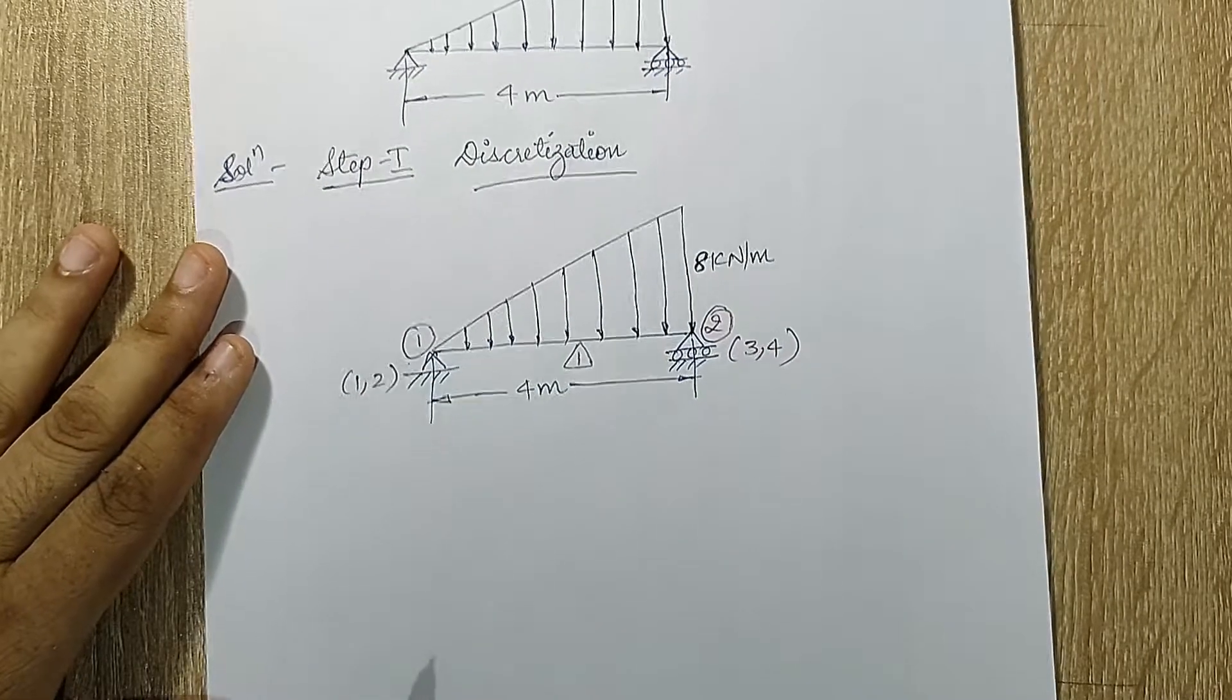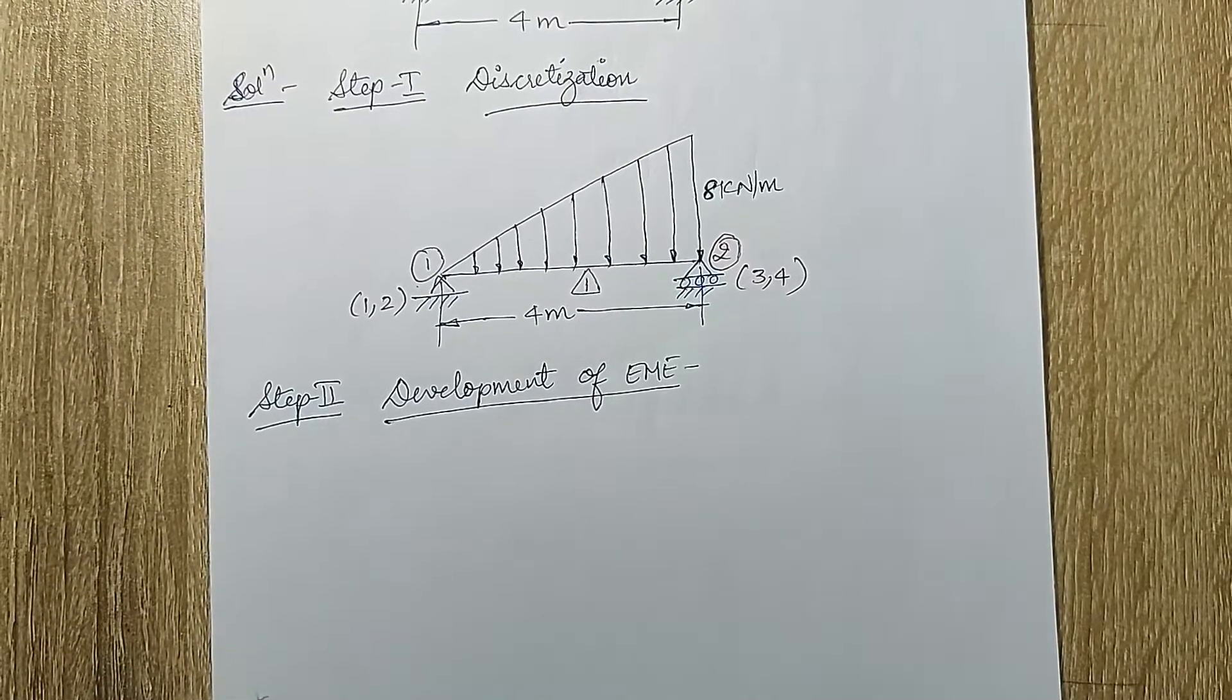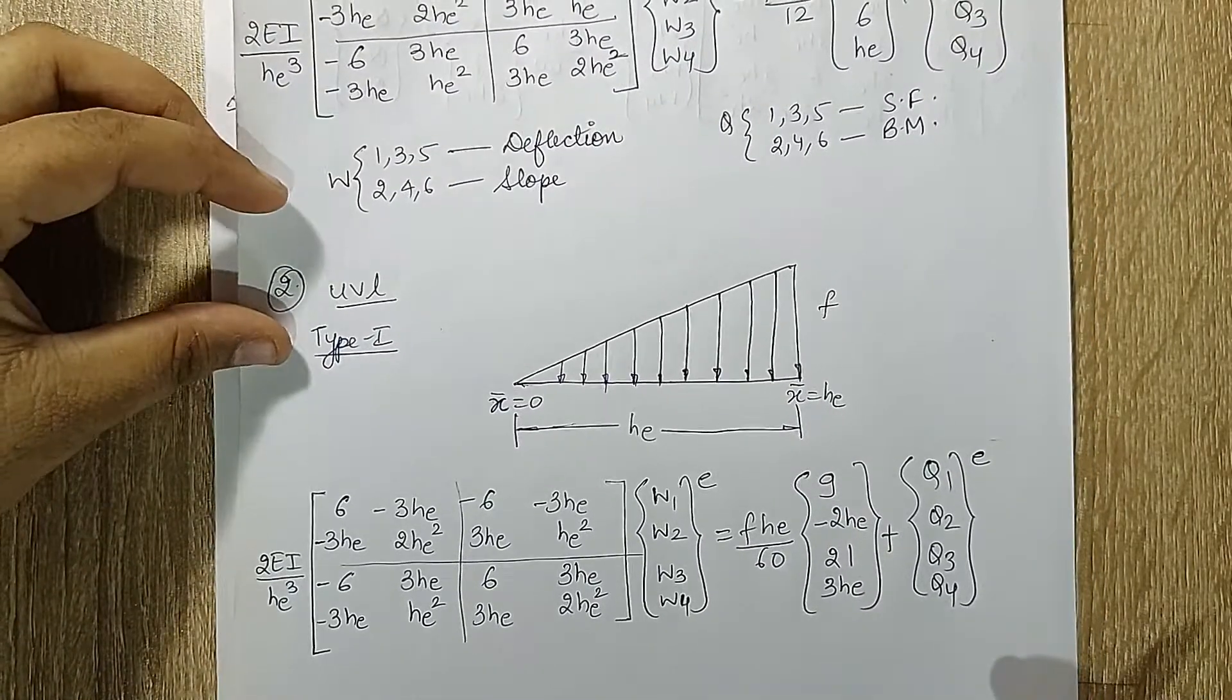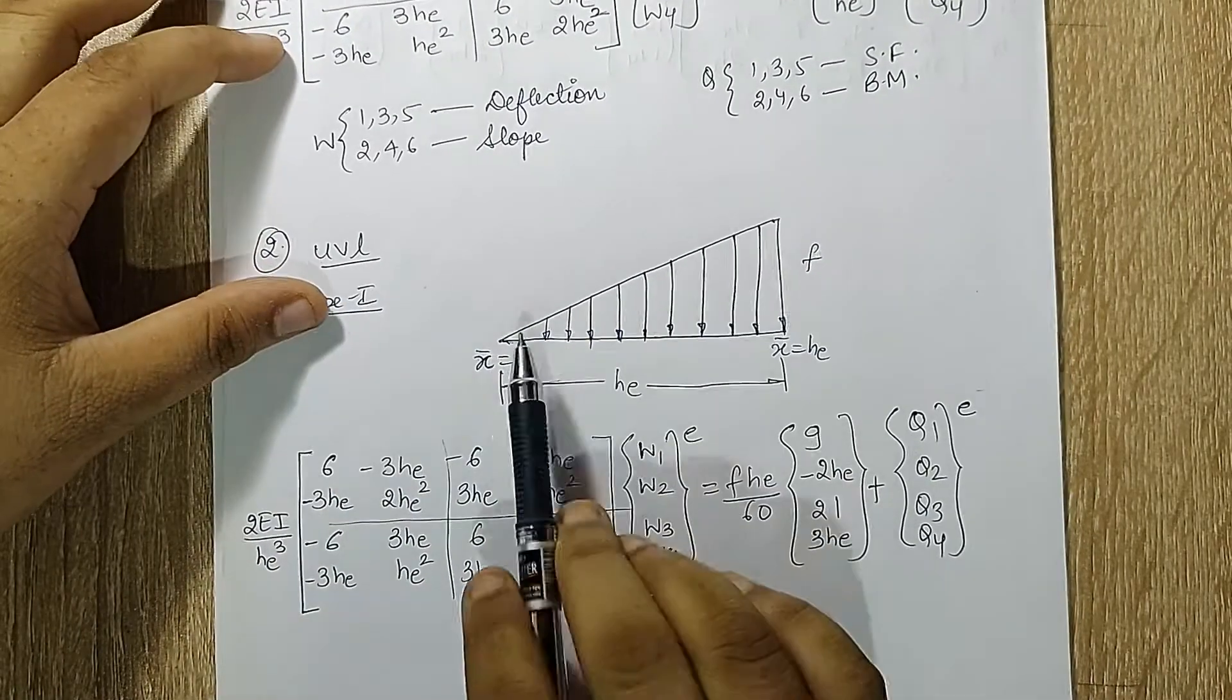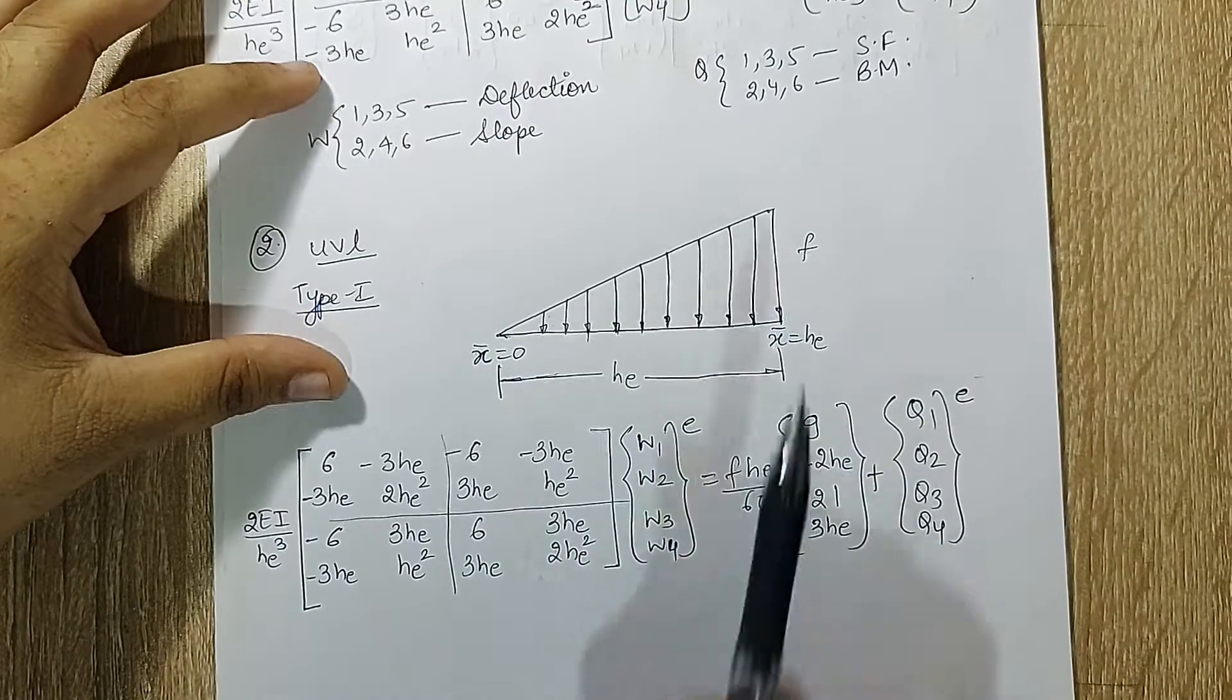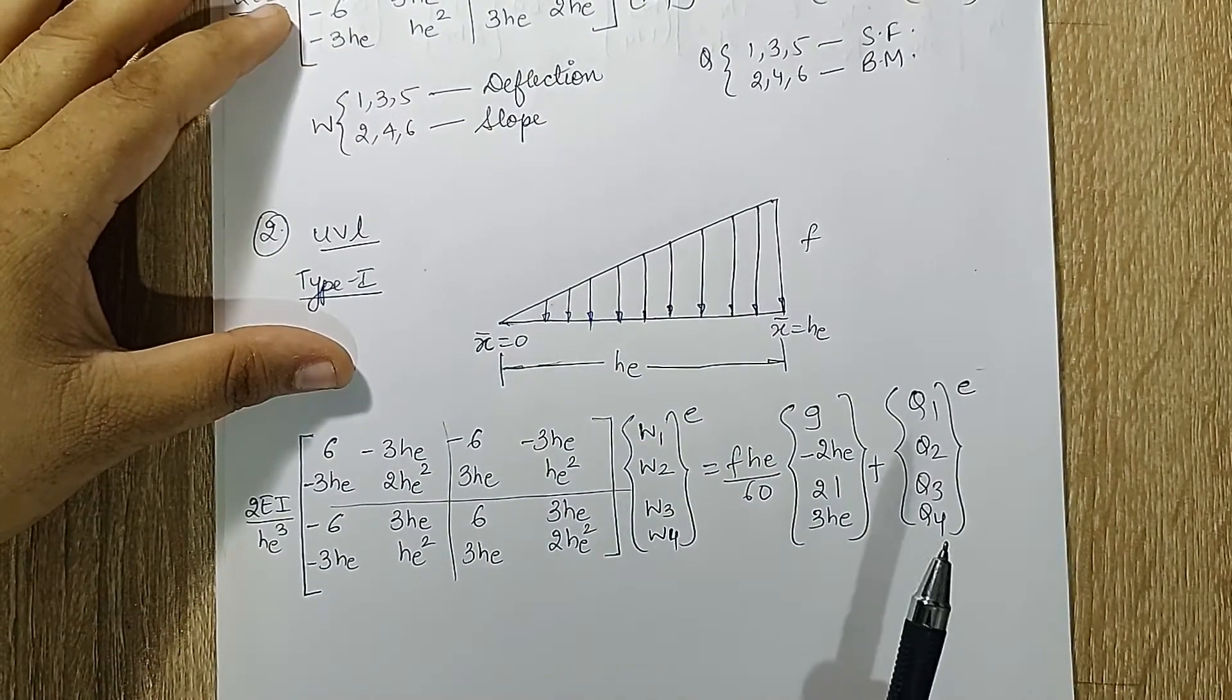Next step is development of EME. Now here at this point I would like to mention that there are two types of UVL. I'll show you a formula list which I have made here. I am showing you the first type of UVL which is of increasing type. When you have a UVL of this sort which is of increasing type, this is the EME that I'm going to use.